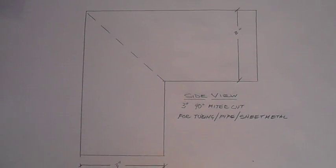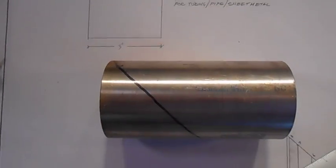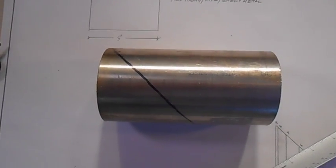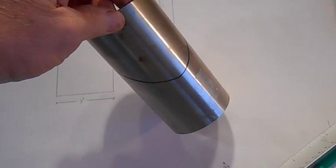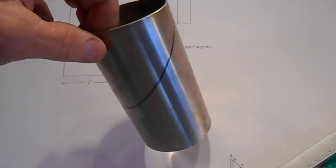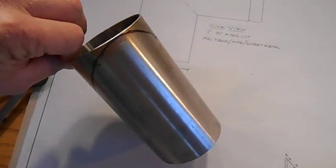Here you see a piece of 3 inch tubing laid out on a piece of paper for a 90 degree miter. I'm going to walk you through how to make a template so you can lay it out on a piece of pipe or tubing as shown and transfer it for cutting.